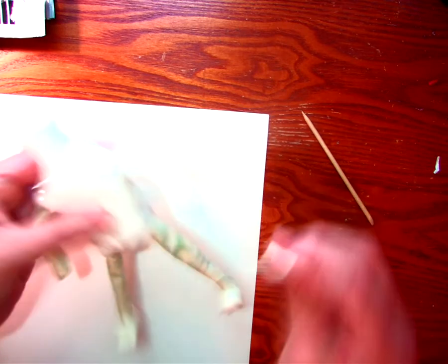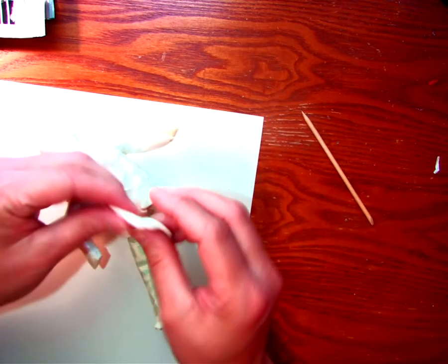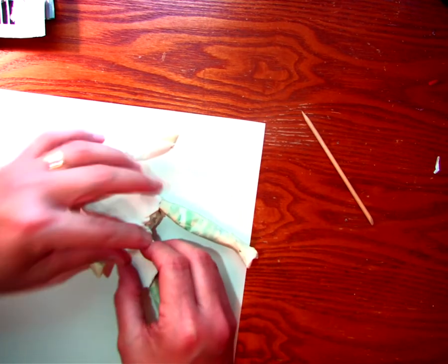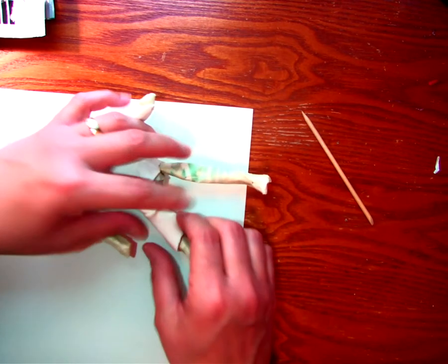Now you want to make sure again that you're flattening it out because if it's too thick you're going to have one area that takes way longer to dry than the others.